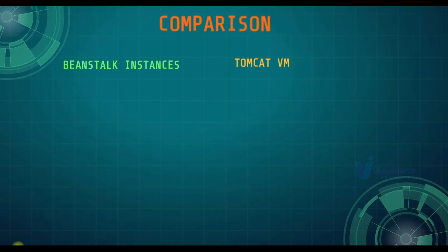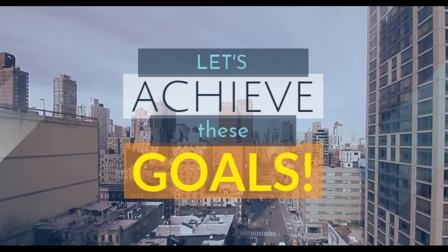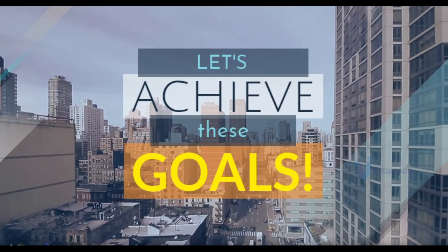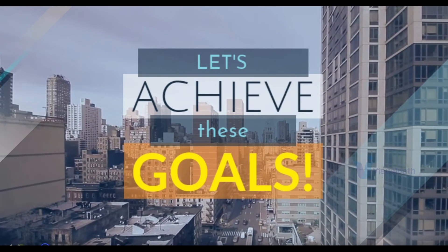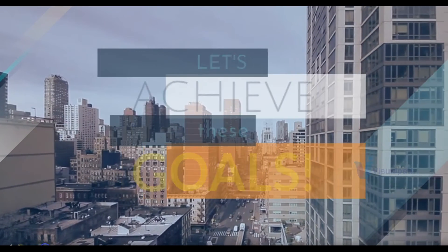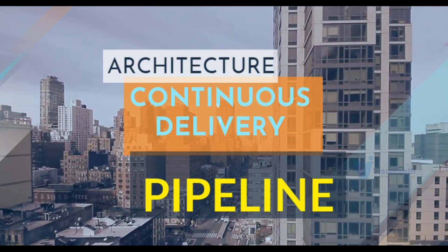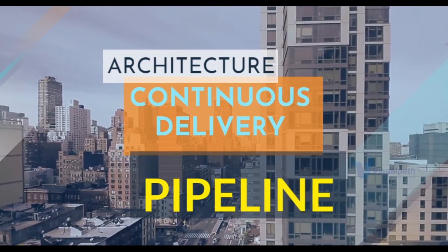A few more comparisons: Beanstalk instances we're going to use instead of Tomcat EC2 instances, and we're going to use AWS RDS instead of managing our database on a VM or EC2 instance. It's time to achieve our goals now, but before we go there, let's look at the architecture of the continuous delivery pipeline.